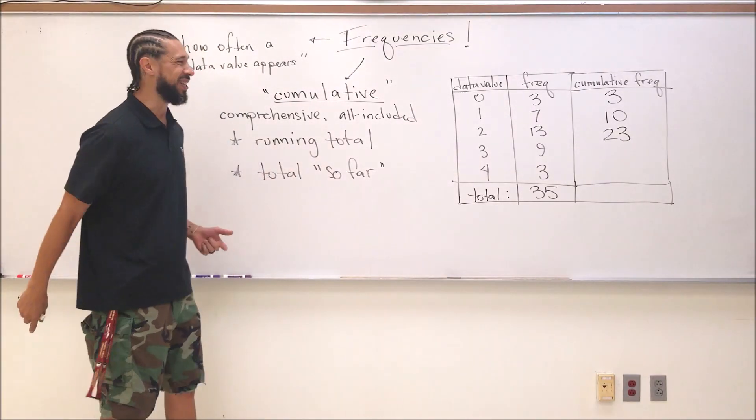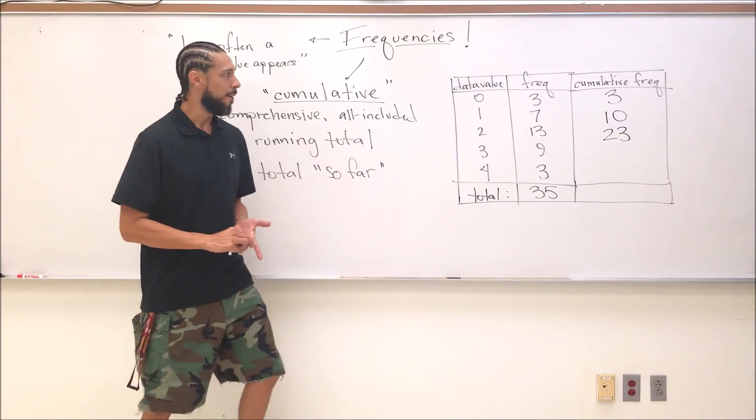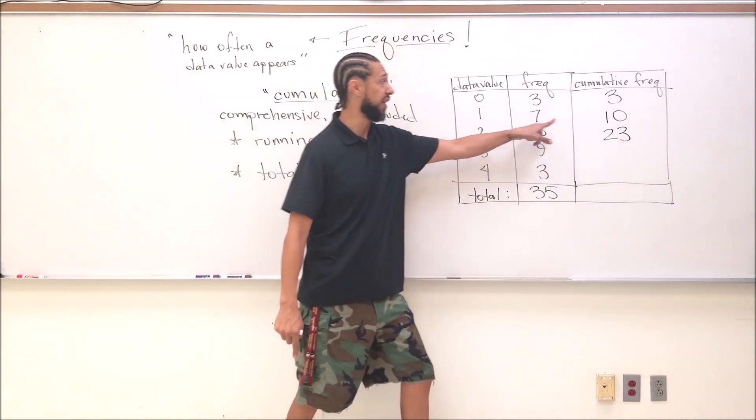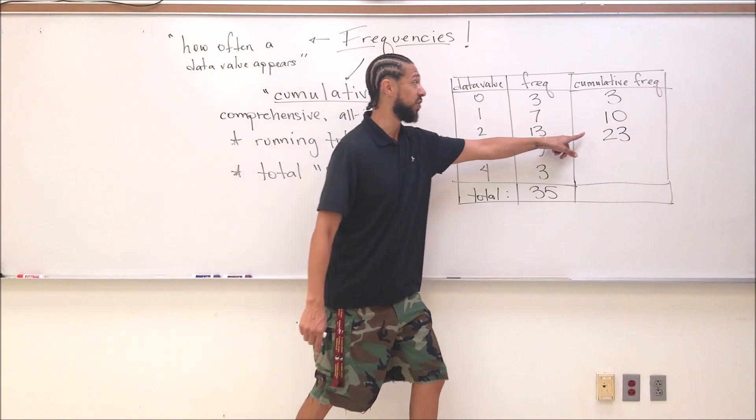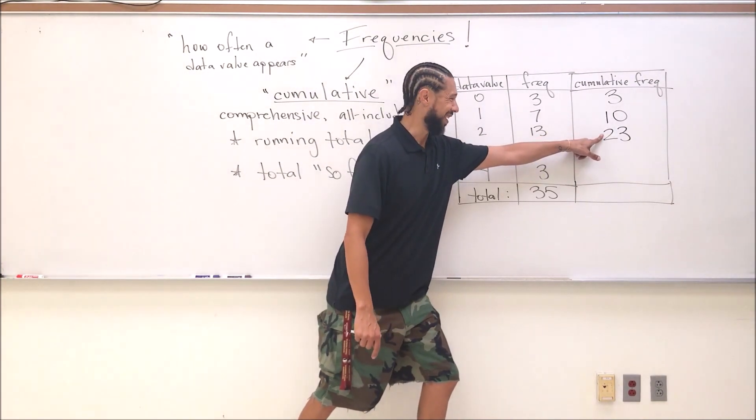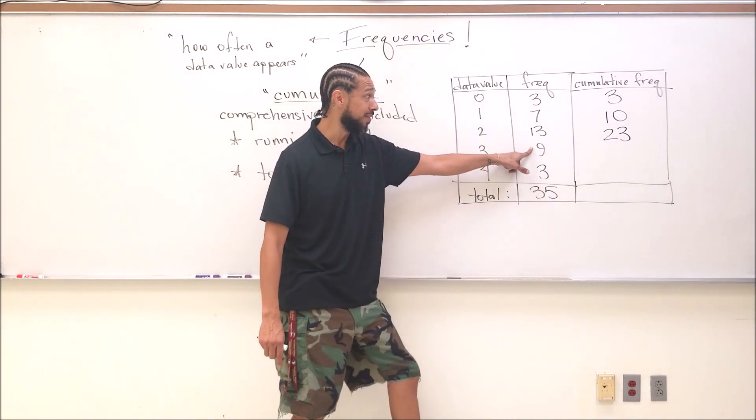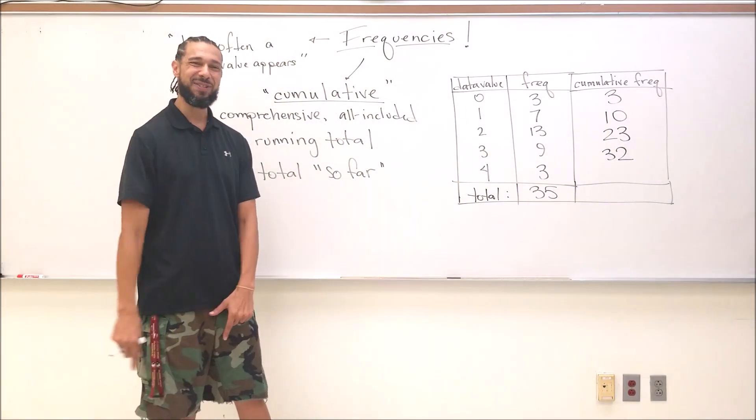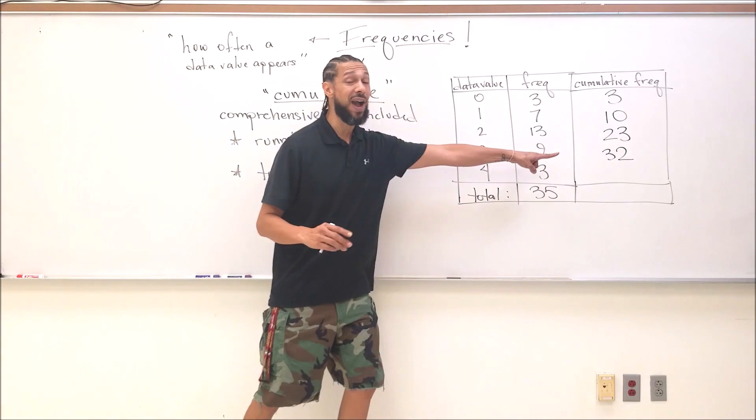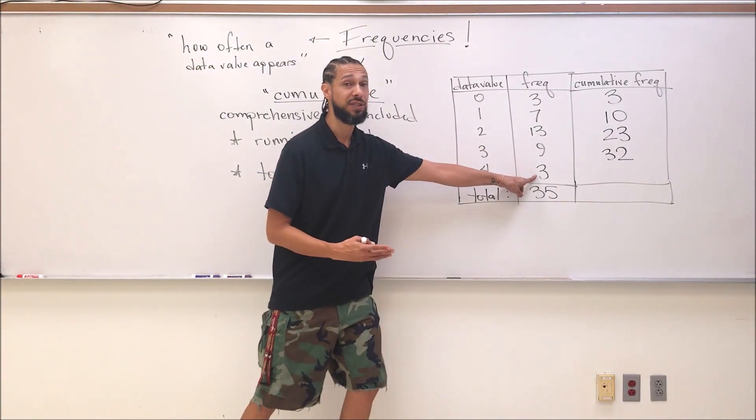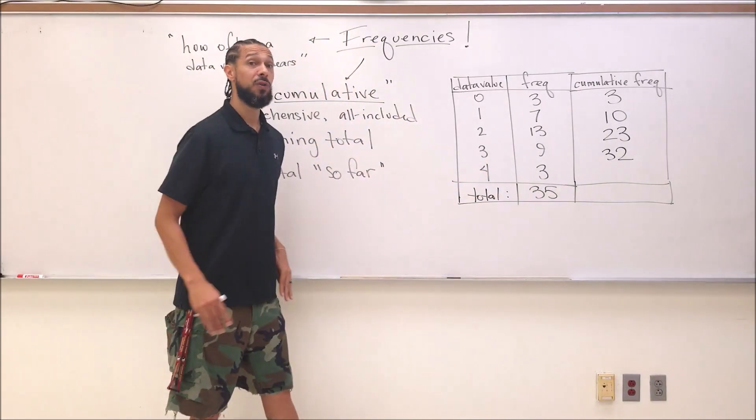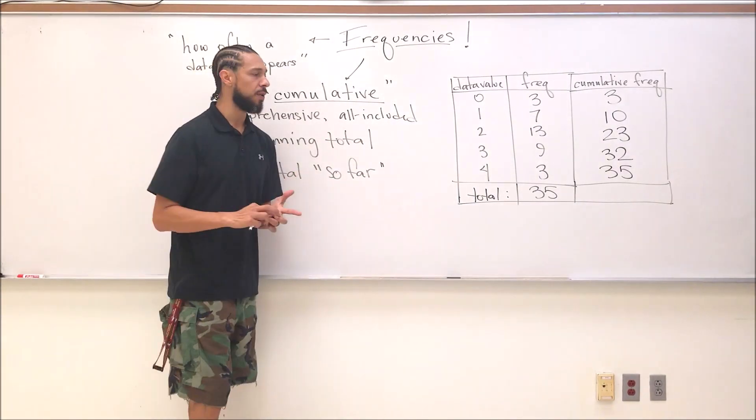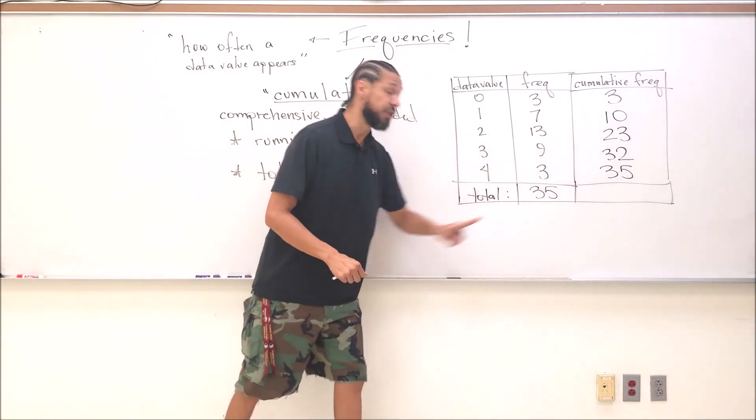I'm going to add those 13 data values to my 10 data values that I have already so far. That 10 plus the new 13 is exactly right, 23. You get this pattern yet? I take this number I start with - that's my starting frequency. I add the 7 to get 10, I add the 13 to get 23. Guess what I'm going to add next? Exactly right, I'm going to add these nine values to that 23. It's 23 plus 9, yes, 32. That is exactly right. Now these 32 values that I have so far, I'm going to add three more data values to that total. What is my final total? Uh-huh, 35.